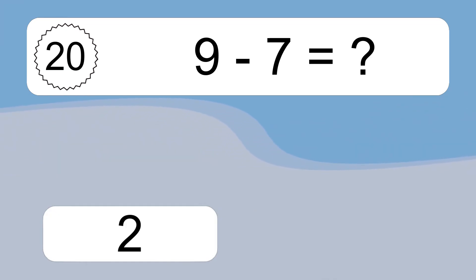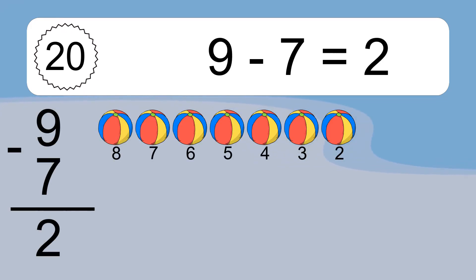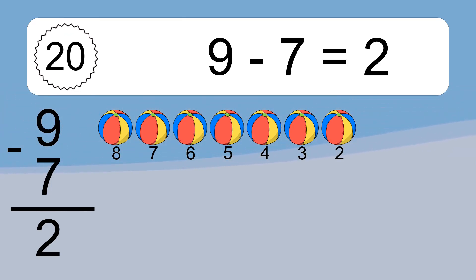9 minus 7 equals 2. Let's count it. 8, 7, 6, 5, 4, 3, 2.